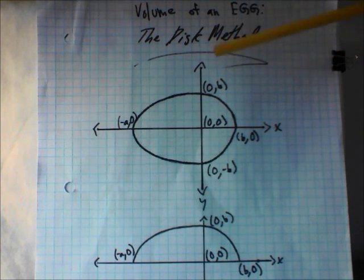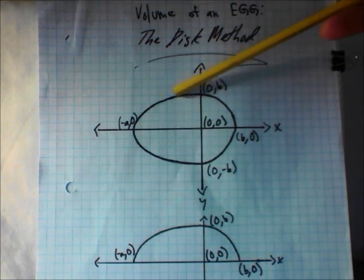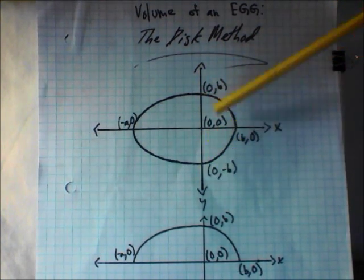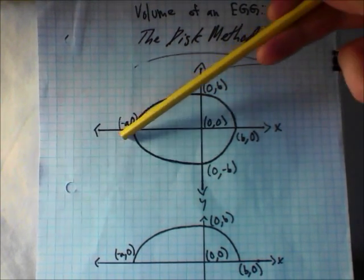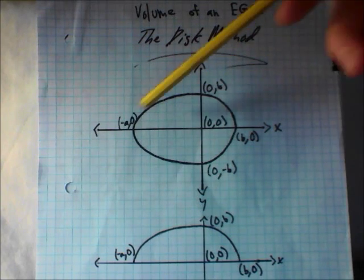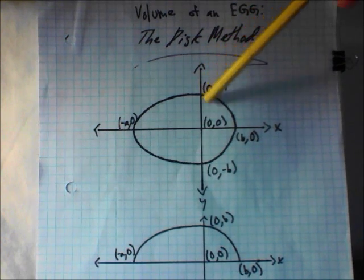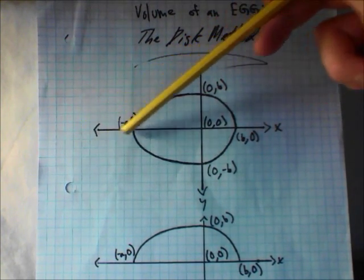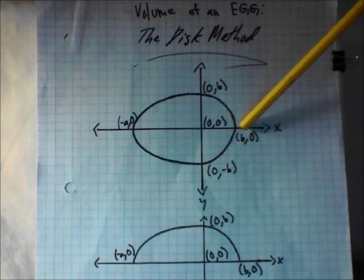We're going to draw the x and y axes through it. We're going to find a point on this ellipse shape of the egg called the minor vertical axis, which is the point where the ellipse stops getting bigger. You find that by locating the widest point of the egg — that's where you draw the y-axis. The x-axis runs from the tip of the egg to the butt of the egg.